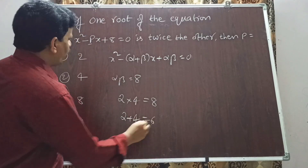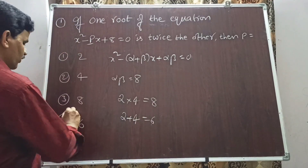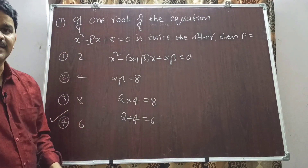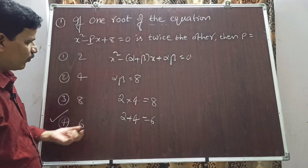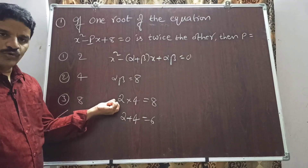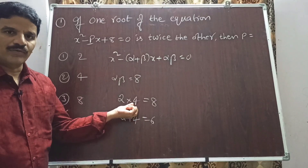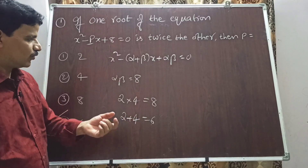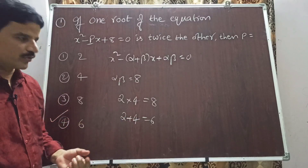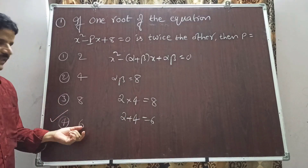Sum of roots: 2 + 4 = 6, therefore p = 6 is the right answer. When alpha = 2 and beta = 2·alpha = 2×2 = 4, option 4: p = 6 is the right answer.